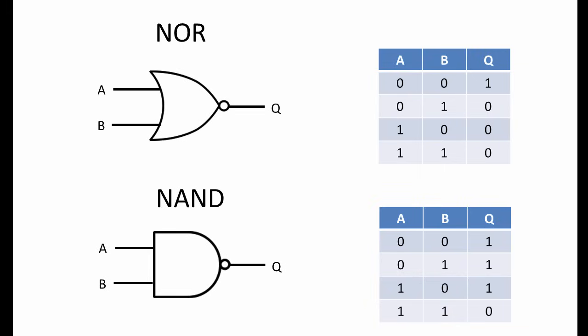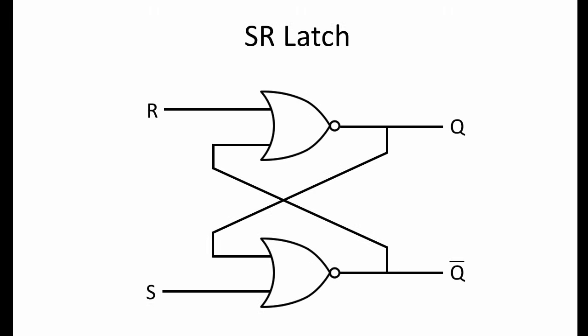The SR latch can be built using one of these two basic building blocks. Let's start by considering an SR latch built from NOR gates. In this NOR gate version of an SR latch, two NOR gates are connected together in such a way as the output of each NOR gate is one of the inputs of the other. This cross-coupling of two gates results in a form of positive feedback.